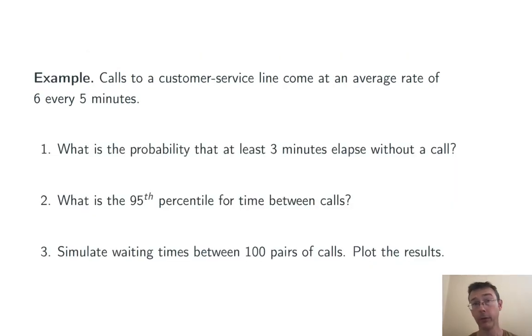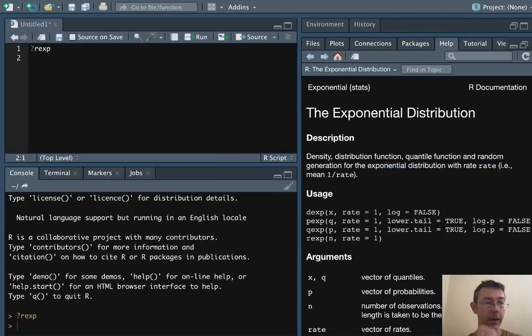Okay, let's do an example. Suppose that calls to a customer service line come in at an average rate of 6 every 5 minutes. So here lambda equals 6/5. First of all, what's the probability that at least 3 minutes elapse without a call? All right, let's swap over to R and take a look at this.